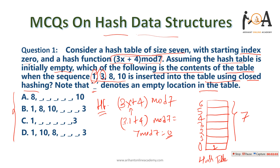For element 3, substitute x = 3: (3×3 + 4) mod 7 = 13 mod 7 = 6. So element 3 is placed at index 6. We can see option A is already incorrect because index 0 should hold 1 and the last index should hold 3. Only options B, C, and D remain.